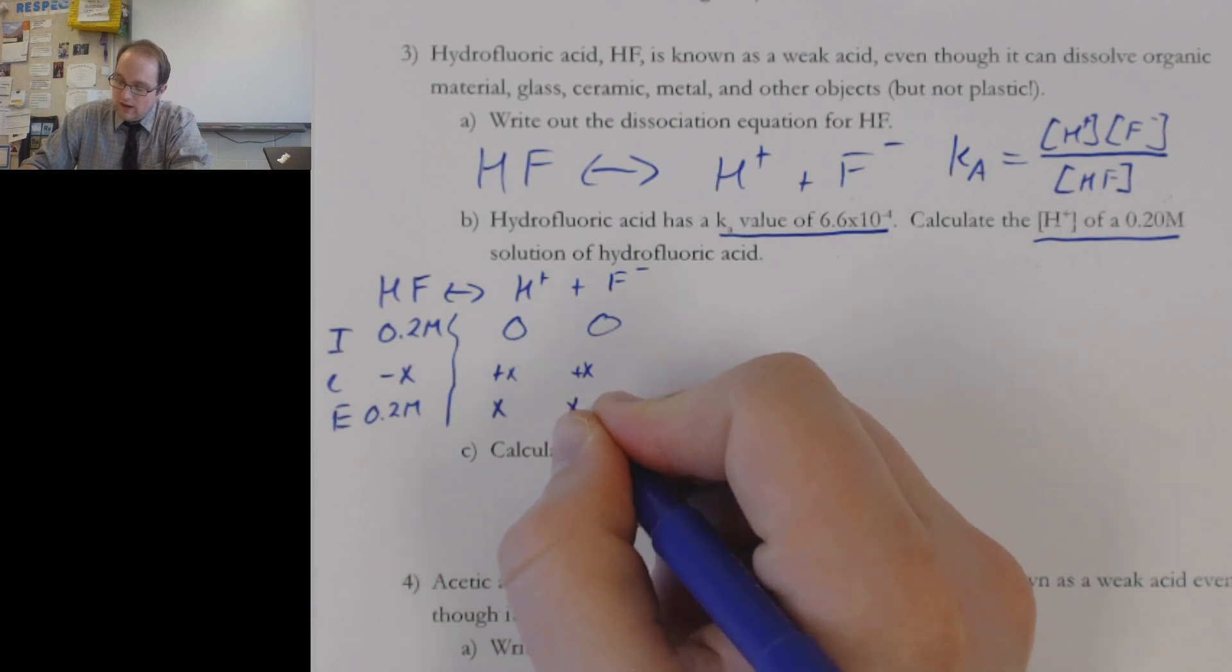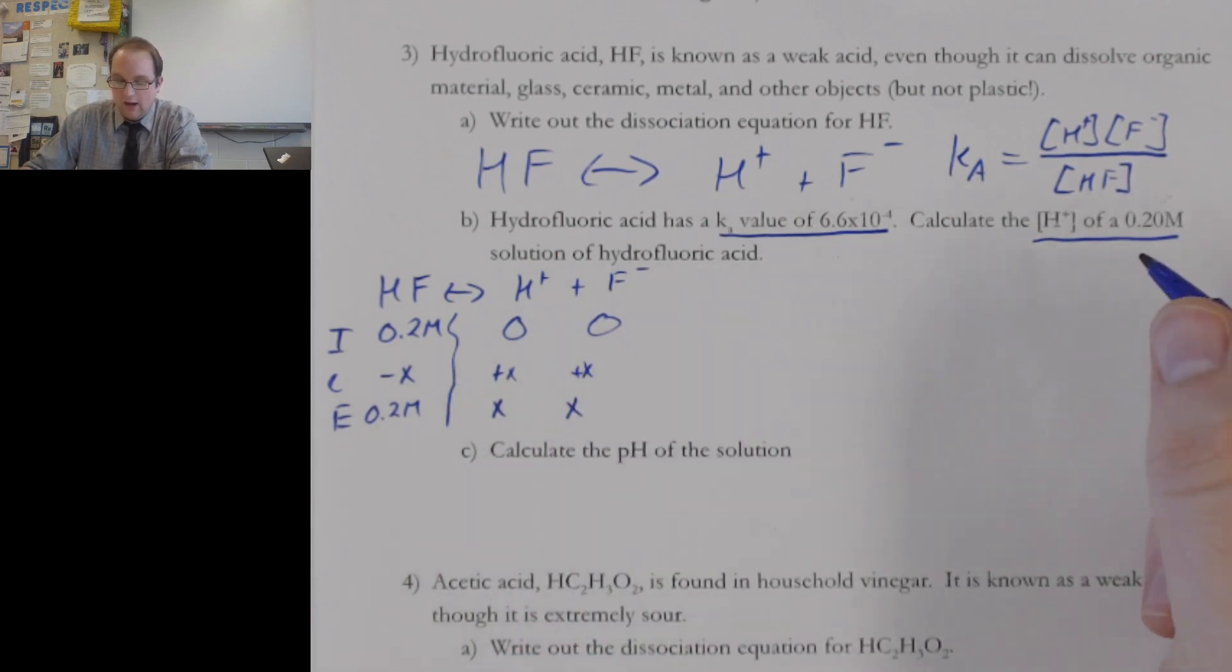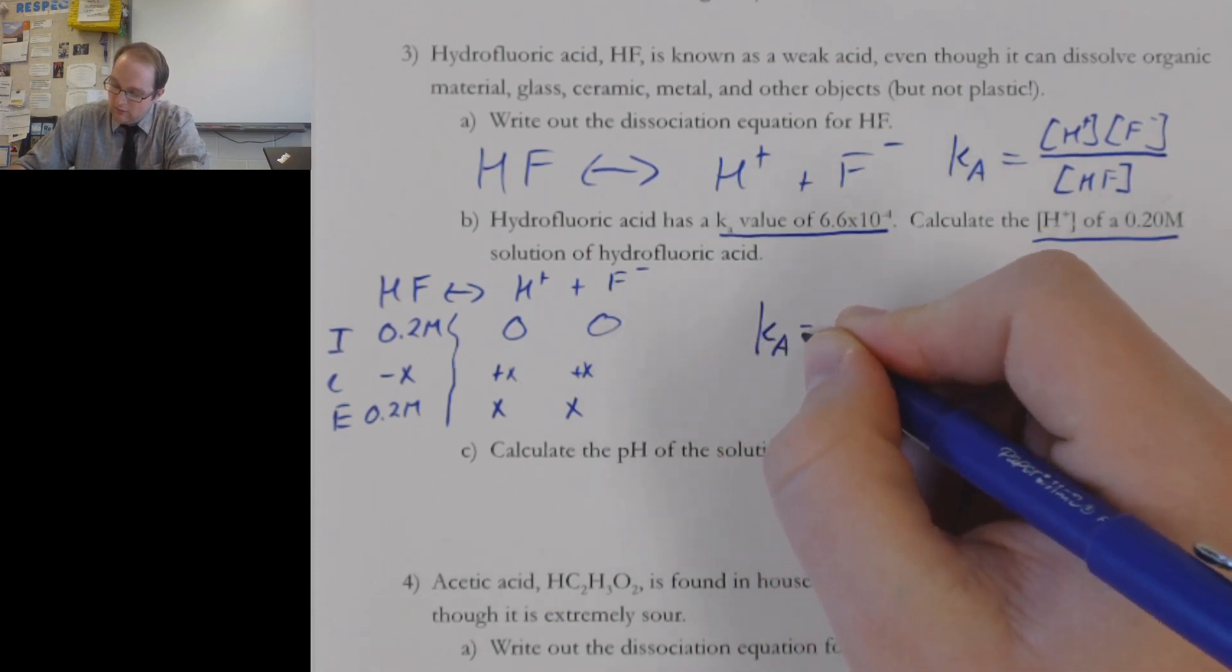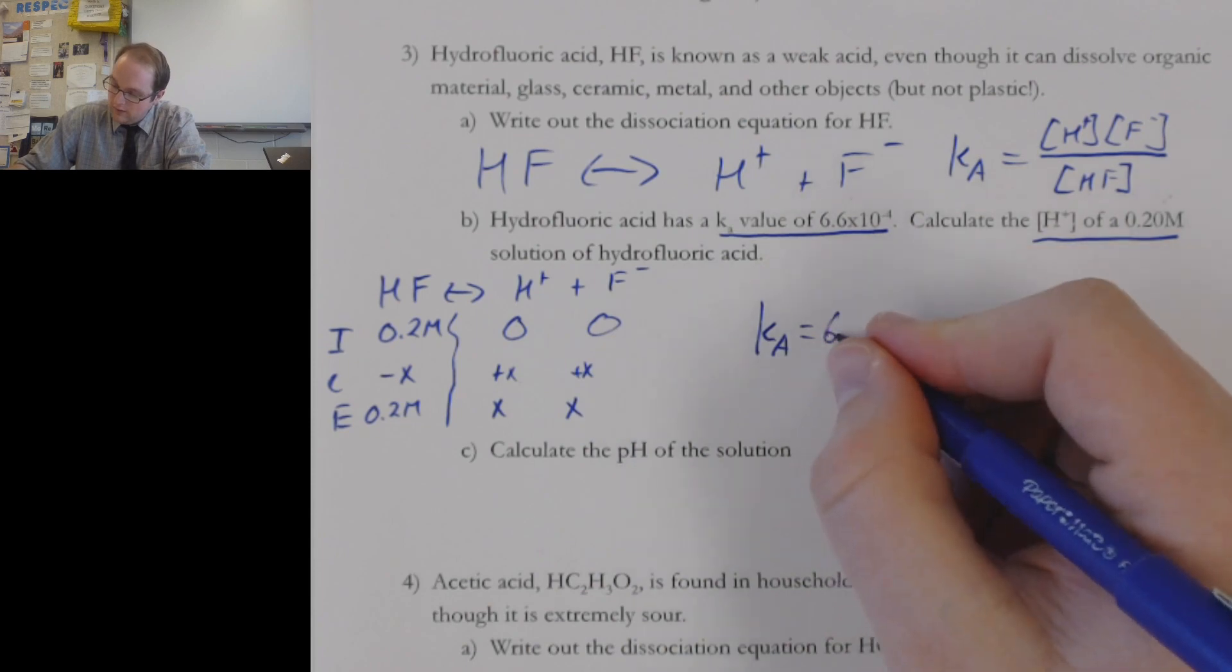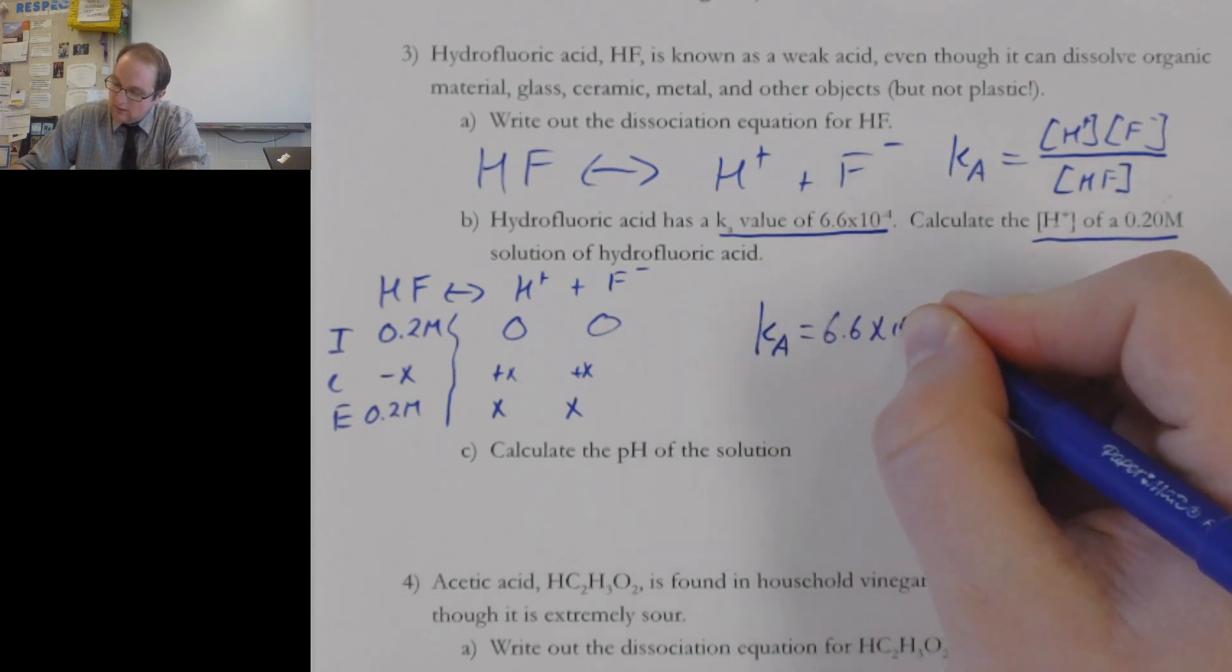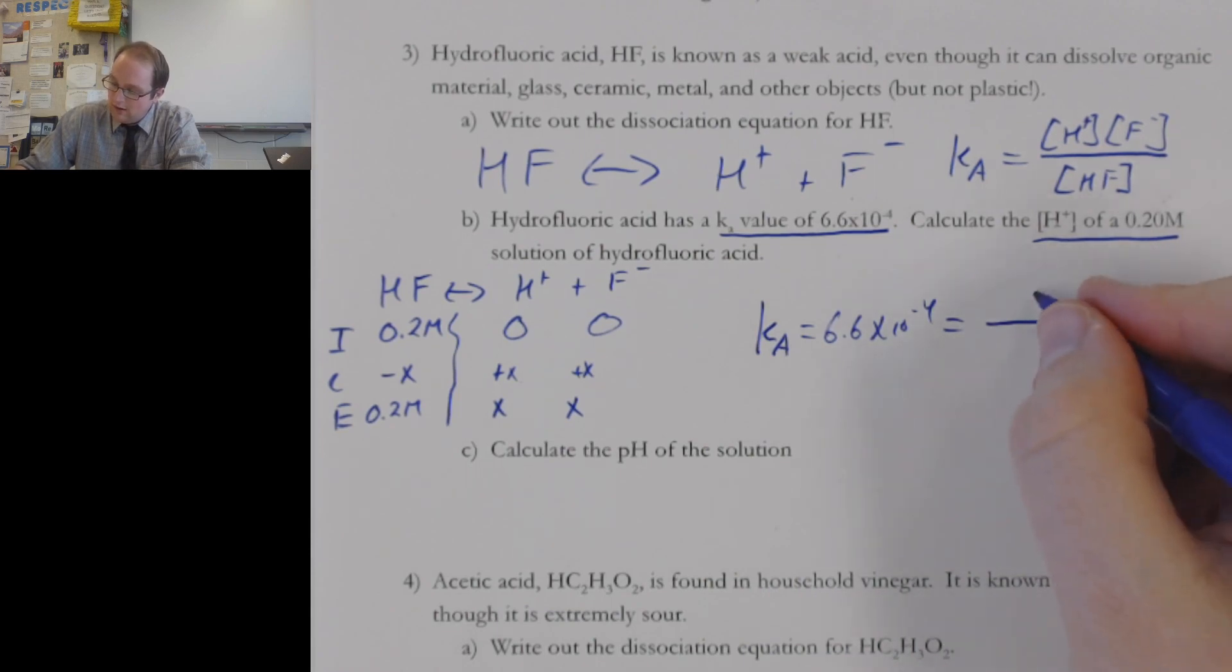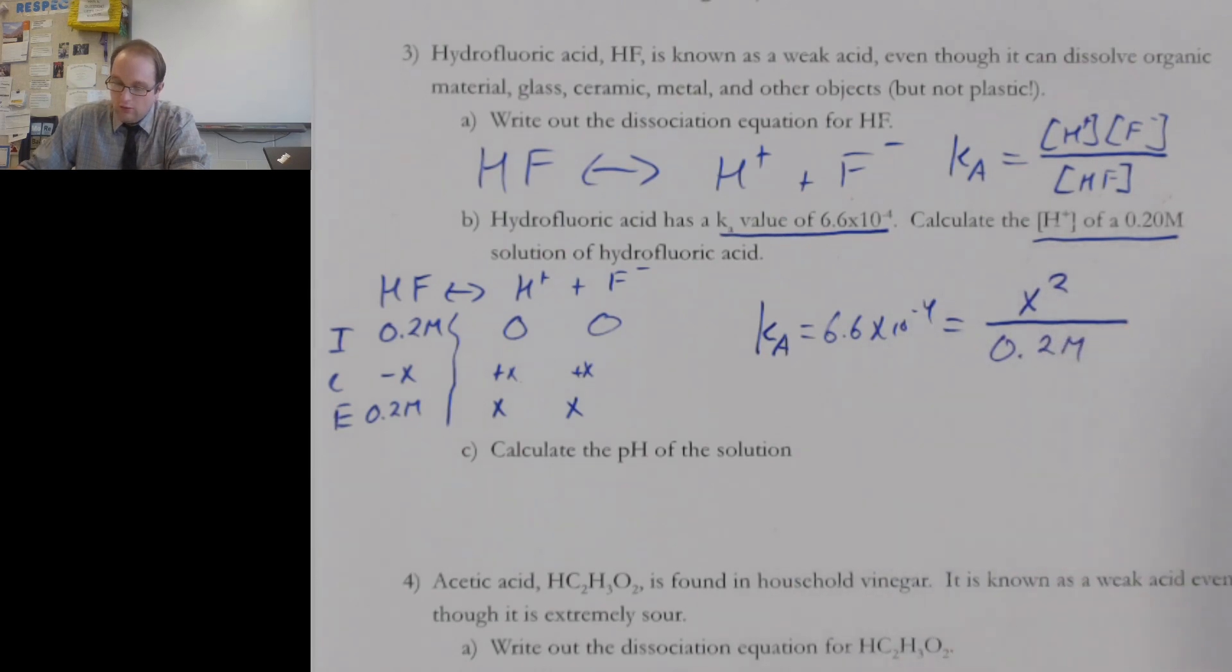Because I know that these guys are now X. And I can go ahead and plug this in to my Ka equation. And I can set this up that my Ka, which of course is our 6.6 times 10 to the negative fourth molar, that's going to be equal to our X squared